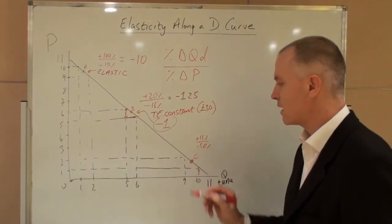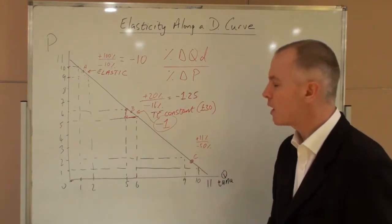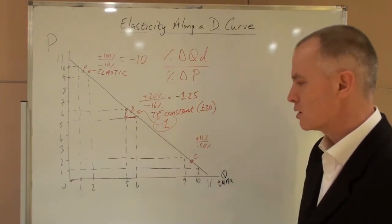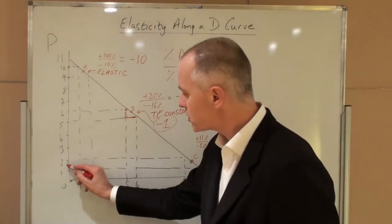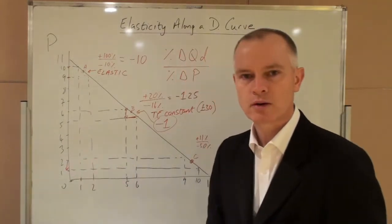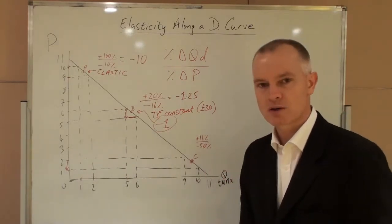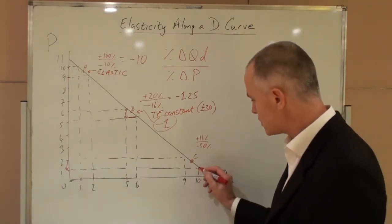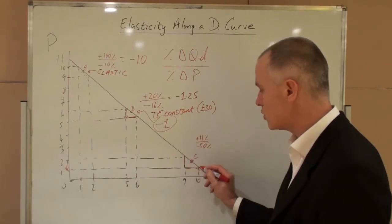Towards the bottom of the demand curve, still the gradient is minus one, we see things changed again. A price cut from two to one is a fifty percent cut in price. This causes an increase in demand again of one unit.